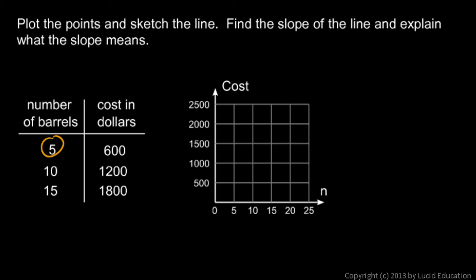So when there's 5 barrels, that costs $600. So we'll plot a point a little bit above the 500, and 10 barrels of oil is $1,200, and 15 barrels of oil is $1,800. So we get a line about like this, and this should make sense. More barrels of oil will cost more dollars.